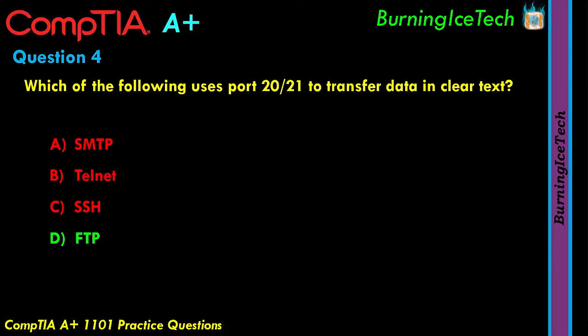The answer is D — FTP, File Transfer Protocol, which uses port 20 and 21. You would be wise to familiarize yourself with what they call well-known port numbers, also called common port numbers. There are about 65,536 port numbers available in the IT industry, but you only need to know about 20 to 30 of the most common ones — the ones that are open by default, like web browsing and email. They like asking about those in these exams, and if you plan on taking N-plus, you absolutely need to know the most common port numbers.